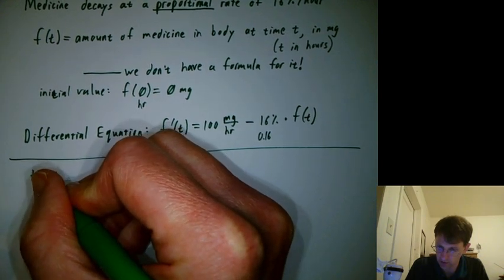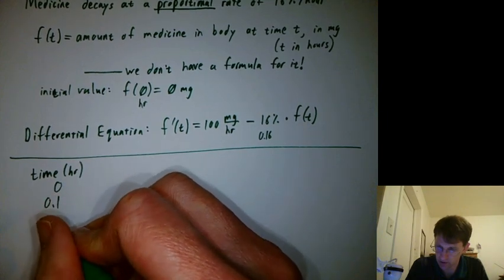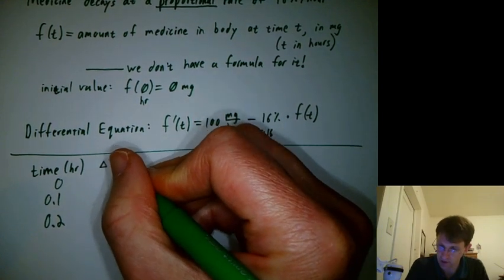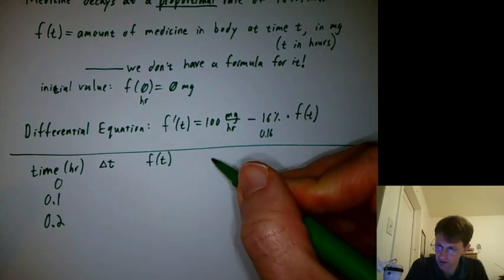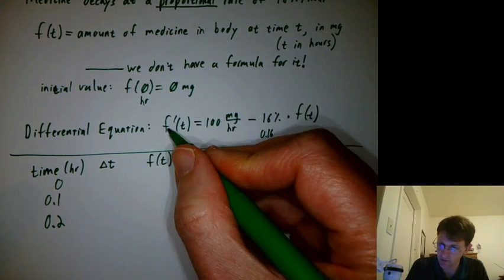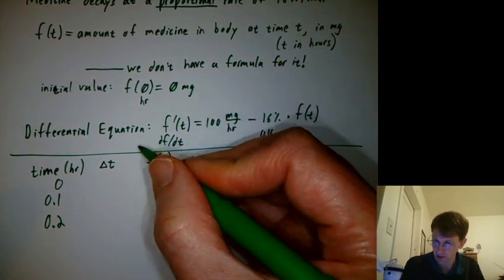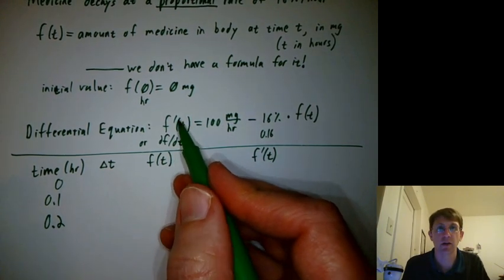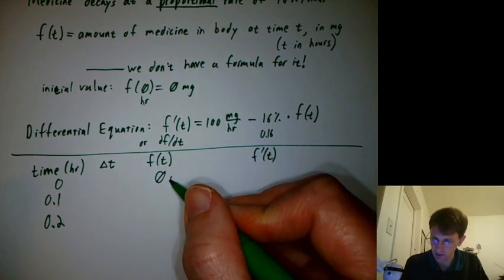Let's sketch out a spreadsheet. Let's have time in hours: 0, 0.1, 0.2, etc. No reason it has to be integer time steps. We'll have delta t, or you could call it dt. We'll have f(t), and we'll have f'(t). Another name for f prime would be df/dt. That's often just as common in differential equations work as saying f prime. So at time 0, we know we had 0 milligrams in the body.